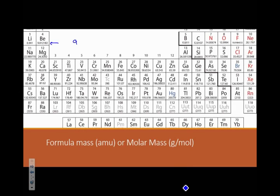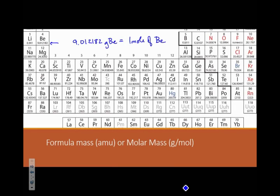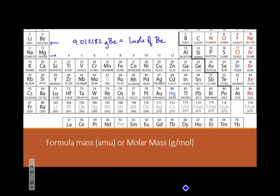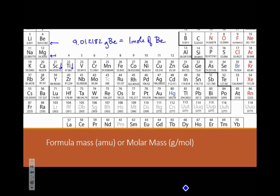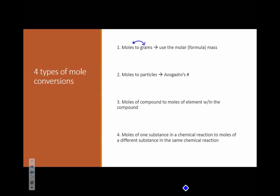So we could say that 9.012182 grams of beryllium equals one mole of beryllium. It's always reference to one mole when you pull this type of number off the periodic table.